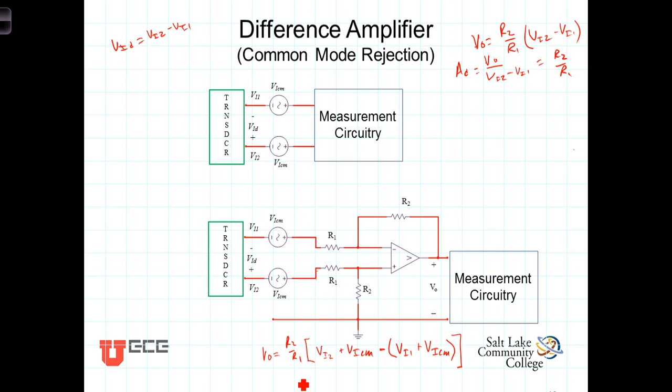And we're left with then, in the ideal circumstance, Vout is equal to R2 over R1 times Vi2 minus Vi1, which is what we've wanted all along.